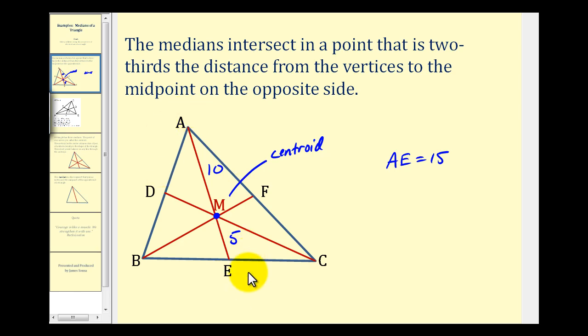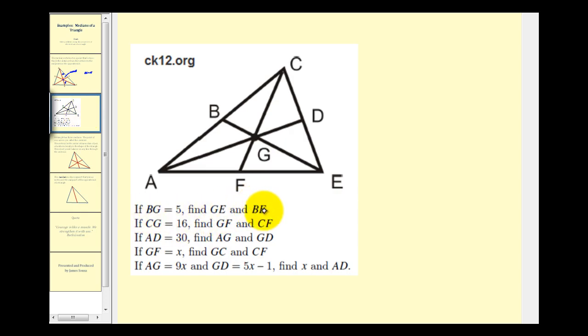All this information is helpful when it comes to solving problems. Here we're given some information and we want to find the length of a variety of segments. First, we're given that BG has a length of five units. We want to determine the length of GE as well as BE. Looking at the median EB, notice that we're given the shorter segment that makes up the median. That means the longer segment would be twice the length of the shorter segment, so GE would be ten units, therefore median BE would be fifteen units.